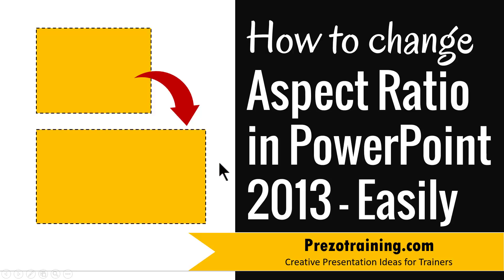There are a couple of good benefits when it comes to using 16:9 slide aspect ratio. One, as a presenter, you get a little more space to work with. Second, if you plan to convert your PowerPoint presentations into YouTube videos, a 16:9 slide aspect ratio matches the default video aspect ratio of YouTube, which is 16:9.